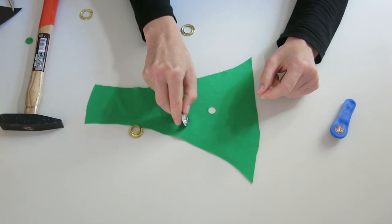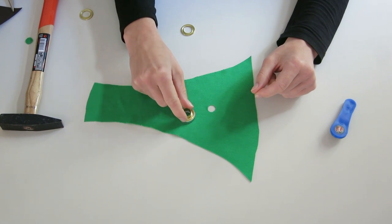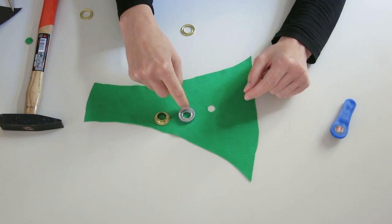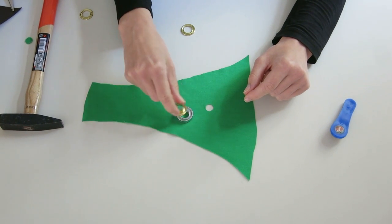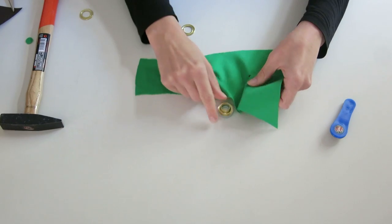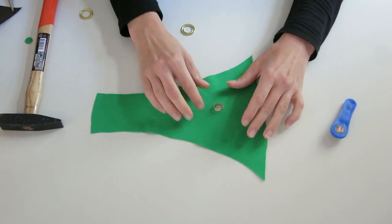For setting the eyelet, you are using now exactly the same tool. However, take care that the metal ring is now upside down. Then the side with the furrow is on top. Into the furrow you can perfectly fit one part of the eyelet. Then you are putting your fabric on top and finish it with the upper part of the eyelet.